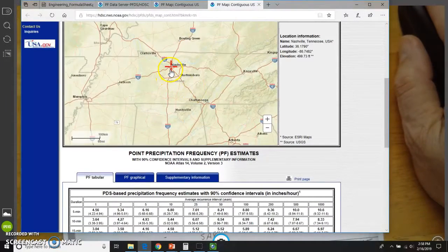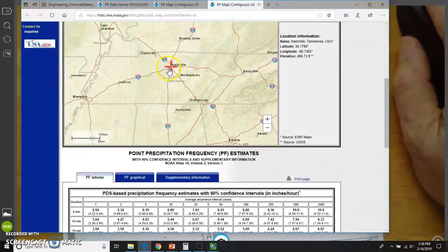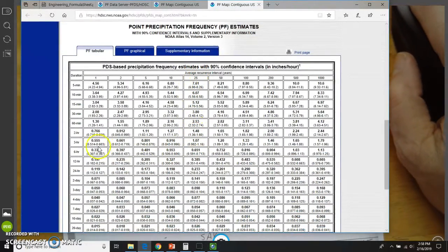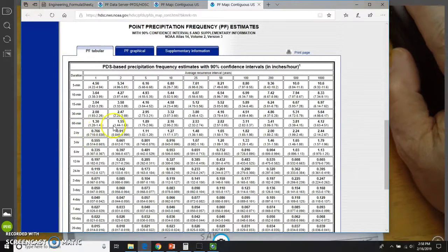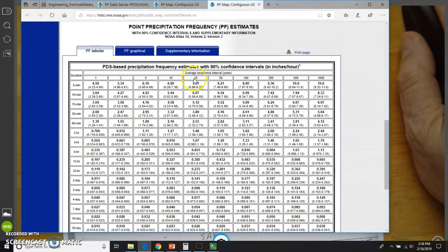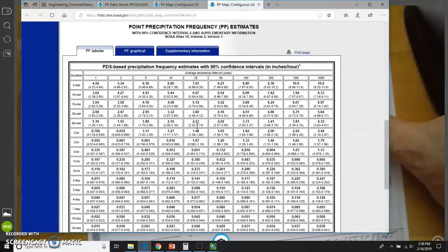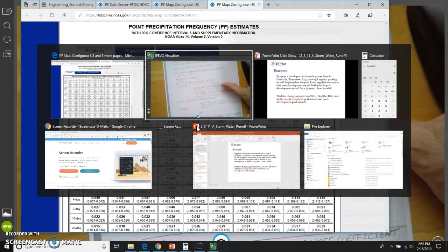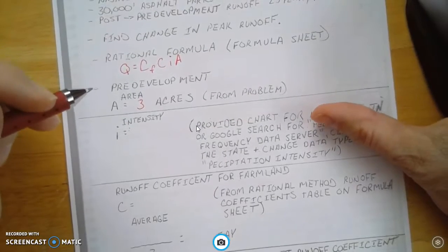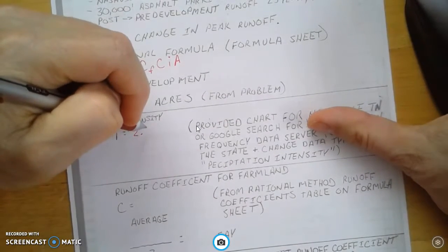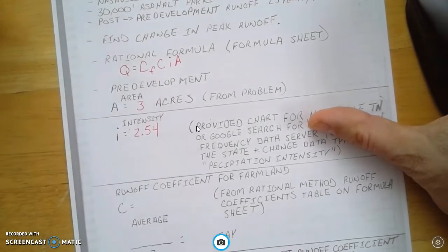Just having this cursor in just a little bit different location changes this value very minutely. So I'm going to use a 60-minute storm, 25-year, 60-minute storm for my intensity. And this is just for consistency with the PowerPoint. I'm going to use an intensity of 2.54 inches.